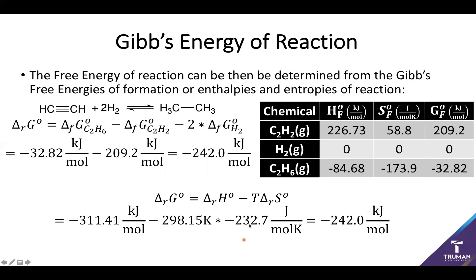We can also derive the Gibbs free energy of reaction using our enthalpies and entropies of reaction determined by products minus reactants. The enthalpy of reaction is about negative 311 kilojoules per mole — a very favorable enthalpy. The entropy of reaction is negative 233 joules per mole Kelvin — an unfavorable entropic term, which makes sense because we start with three gas phase species and make one. The enthalpy is much more important than the entropy at low temperature. As temperature increases, enthalpy becomes less important, but the reaction remains favorable. Being state functions, both methods give the same answer.